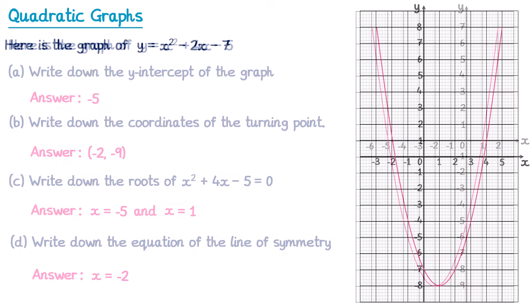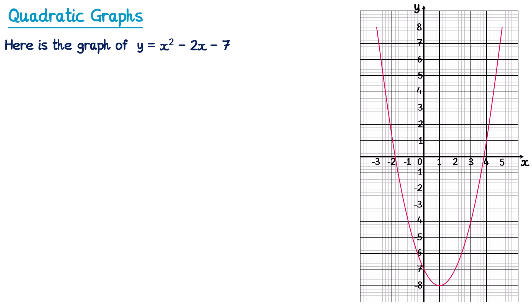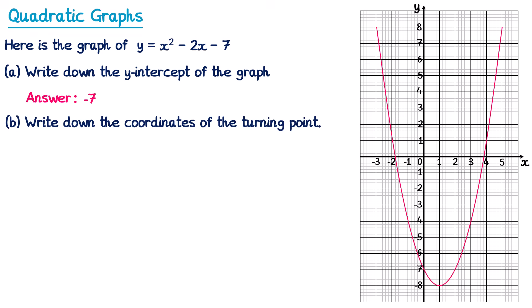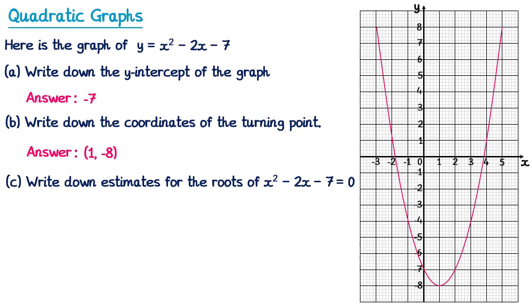Now we're going to try another one that's slightly different. We have another graph and its equation, and we start by writing down the y-intercept — it crosses the y-axis at negative 7, so the answer is negative 7. For part b, the turning point is here — the x-coordinate is 1 and the y-coordinate is negative 8, so the answer is 1, negative 8. For part c, things are a little different. We find where it crosses the x-axis, but this time it doesn't cross at nice numbers — the question says to write down estimates for the roots, meaning our answer might not be exact but should be close.